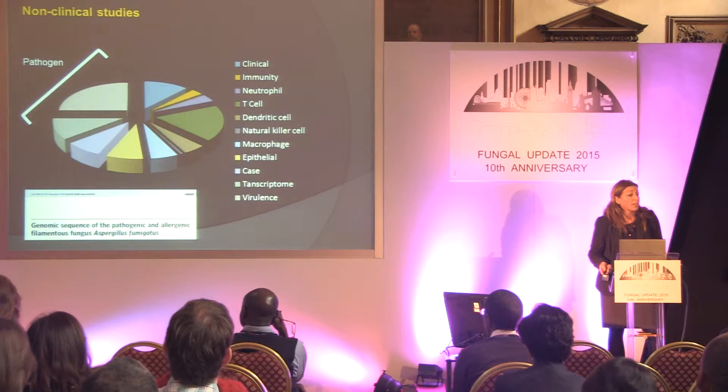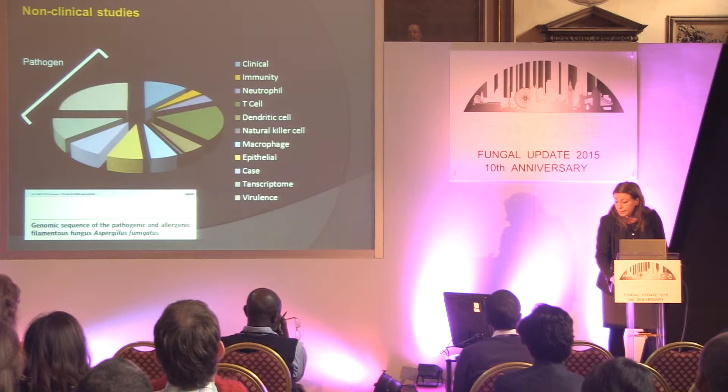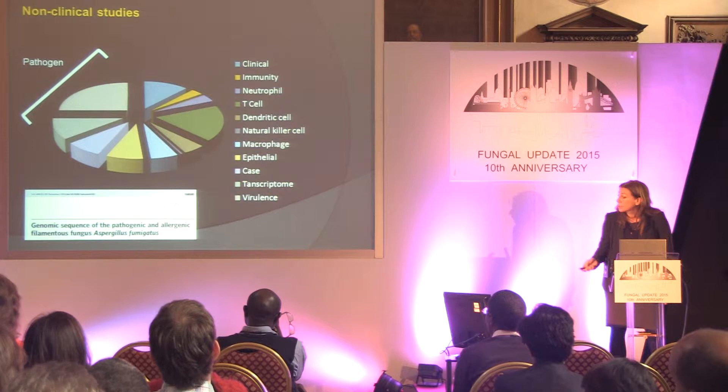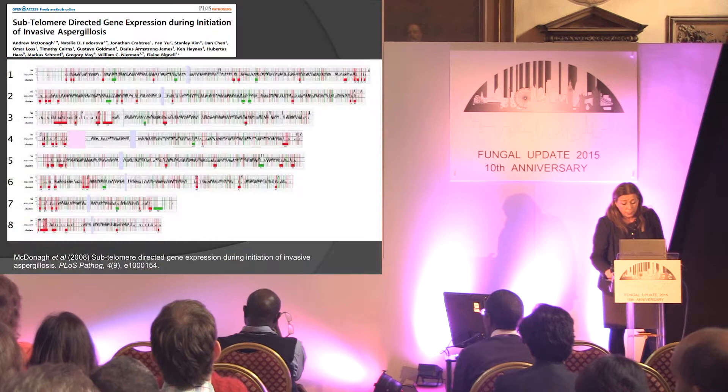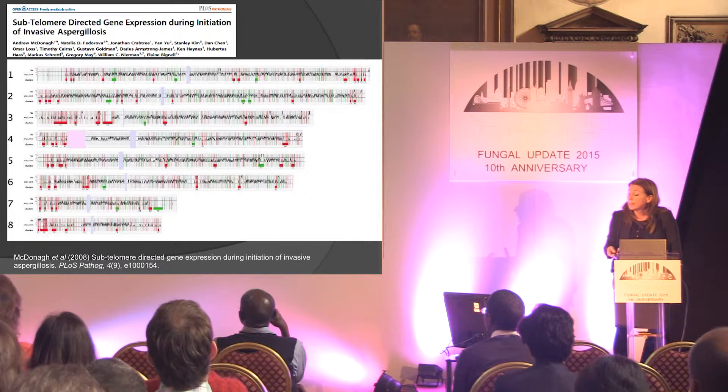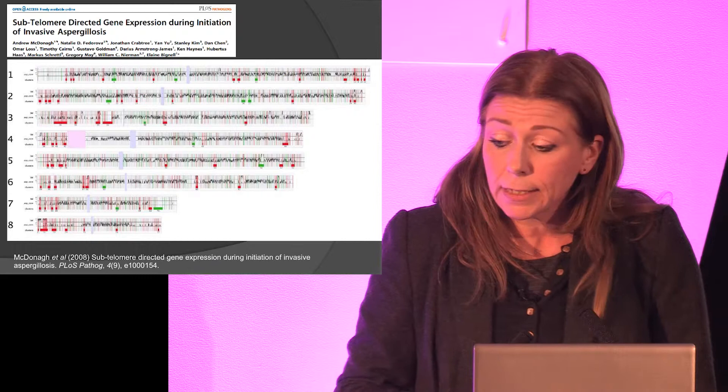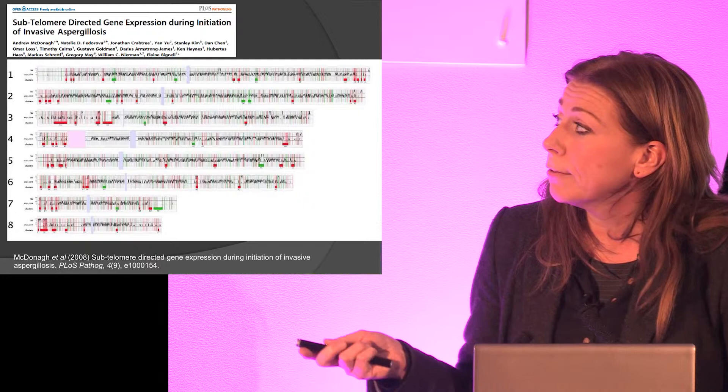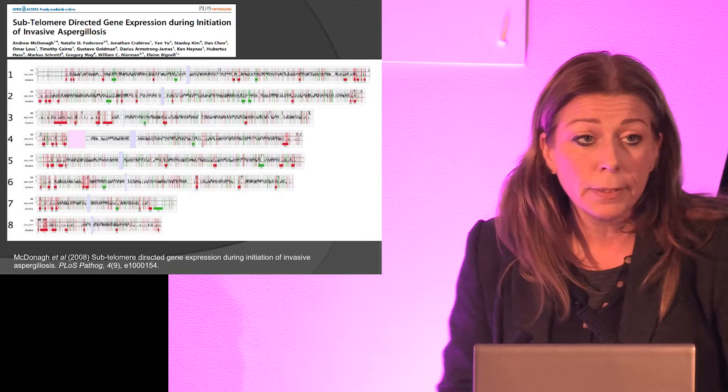Much of what we've learned about the pathogen has been assisted by the availability of the genome sequence, because this is a pretty difficult organism to manipulate at the genetic level. A whole host of transcriptomic studies emerged very shortly after publication of the genome sequence, but only one group has thus far managed to publish data derived from the mammalian host environment — this is work from my group. This is a paper we published in 2008, a neutropenic mouse study.